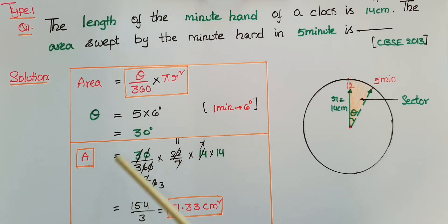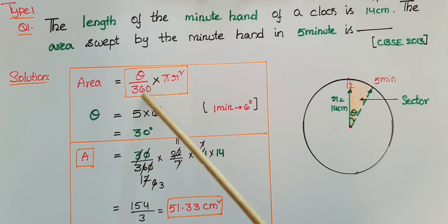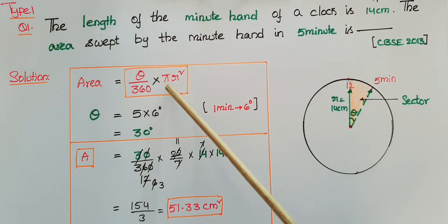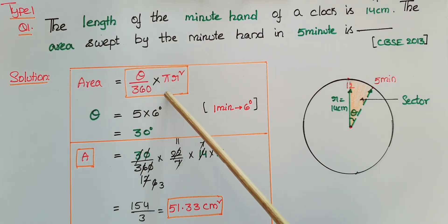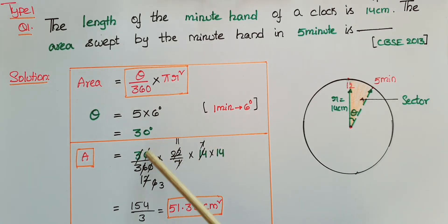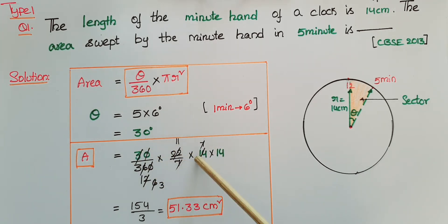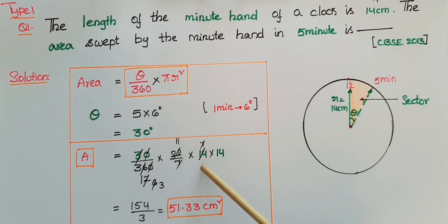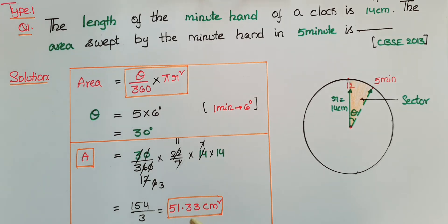Area of the sector is equal to (theta/360) × πr². So here theta is 30, giving (30/360) × (22/7) × 14 × 14. This gives 154/3, that is 51.33 centimeters squared.